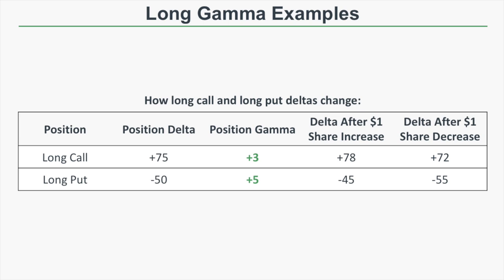Regarding the put: if the stock price falls by one dollar, you're expected to profit by 50 dollars since the position delta is negative 50. After that one-dollar decrease, the new position delta is negative 55, meaning a subsequent dollar decrease yields a profit of 55 dollars. In a nutshell, positive gamma means you want the stock price to move through your long strike price, because the delta grows more and more in your favor, leading to larger and larger profits.